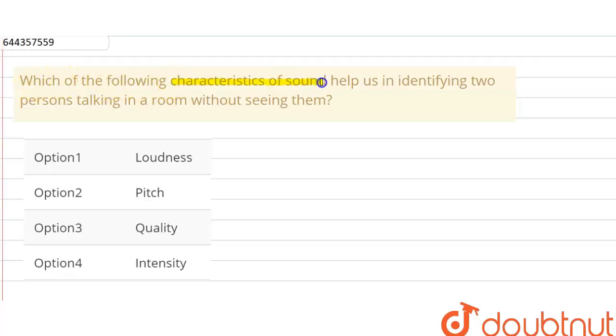the following characteristics of a sound help us in identifying two persons talking in a room without seeing them? Here we have given four options: option one is loudness, option two is pitch, option three is quality, and option four is intensity.